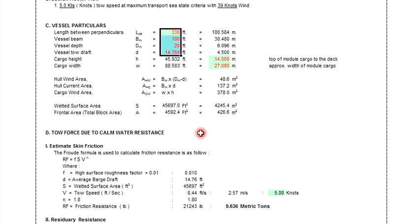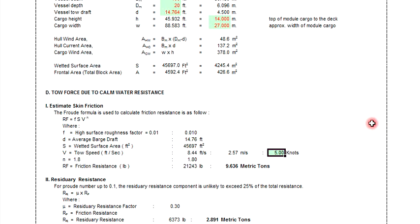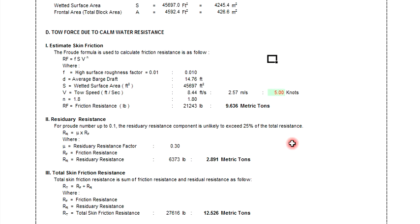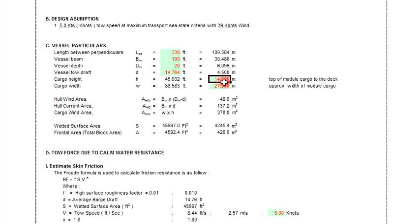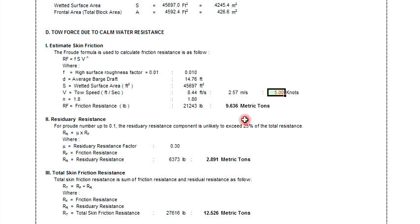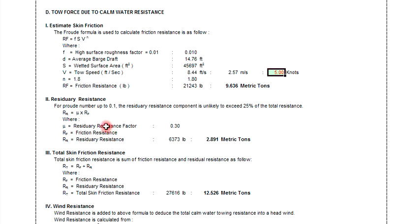After getting all the areas, you proceed to the tow force calm water resistance. Enter the tow speed in knots — I put five knots here, but this depends on your barge. This section also calculates residual resistance and estimated skin friction using the ITTC formula. After inputting all the red fields, the skin friction resistance and residual resistance are calculated automatically.